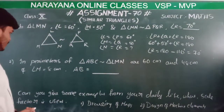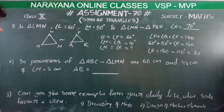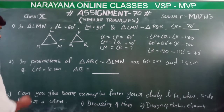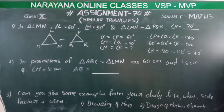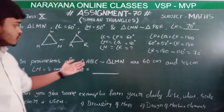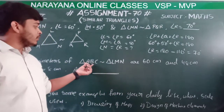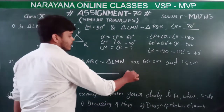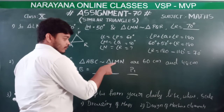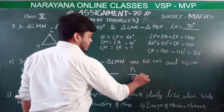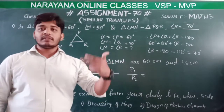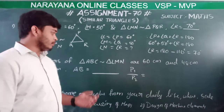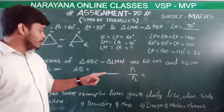Now in the next question, the perimeter of triangle ABC is 60 centimetres and the perimeter of triangle LMN is 48 centimetres. We need to calculate AB, given that LM equals 8 centimetres. We know these two triangles are similar. Let P1 be the perimeter of triangle ABC and P2 be the perimeter of triangle LMN. If the two triangles are similar, perimeter by perimeter is equal to side by side — they are proportional.